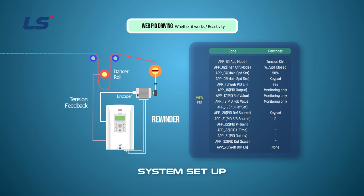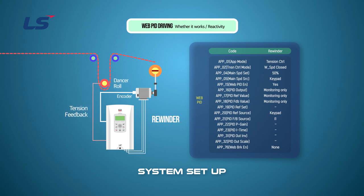Check whether the inverter output speed is changed and its reactivity while manually changing the dancer's position. You can check it by monitoring PID instructions, feedback, and output. Change the PID gain to improve reactivity. In general, if the inertia is high or the gear ratio is high, a large control gain is required.